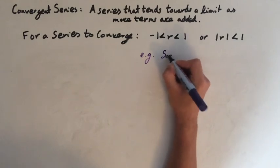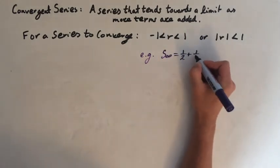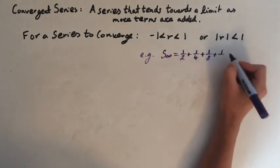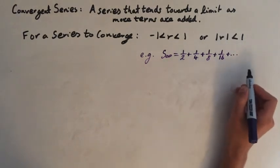A series with an infinite number of terms. This equals a half plus a quarter plus an eighth plus a sixteenth etc, all the way to infinity. So there's an infinite number of terms here.